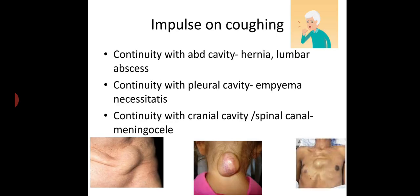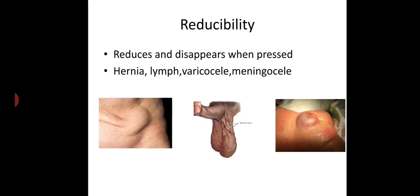Next, impulse on coughing — in case of continuity with abdominal cavity, pleural cavity, cranial cavity, or spinal canal. Examples of continuity with abdominal cavity include hernia and lumbar abscess. Continuity with spinal canal as in meningocele. Next, reducibility — the mass will reduce and disappear when pressed. Examples: hernia, lumbar, pericoecal, meningocele.